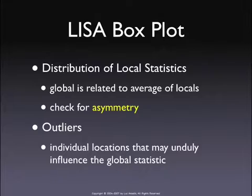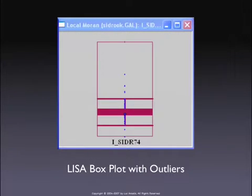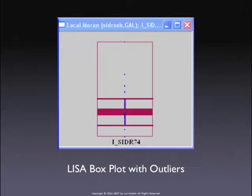This looks like any other scatter plot. This is the North Carolina case, so we have two lower outliers here and a few in the higher outliers. By linking and brushing, you can see whether these are in fact significant on the significance map.